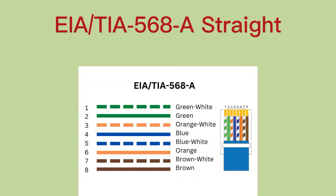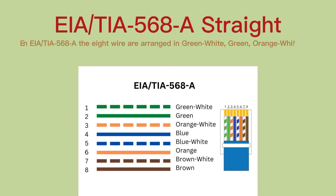EIA/TIA 568A straight. In EIA/TIA 568A, the eight wires are arranged in the following order: white-green, green, white-orange, blue, white-blue, orange, white-brown, brown.